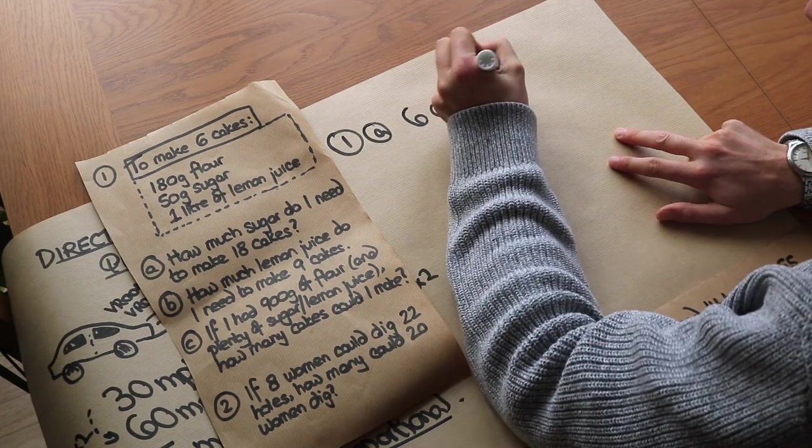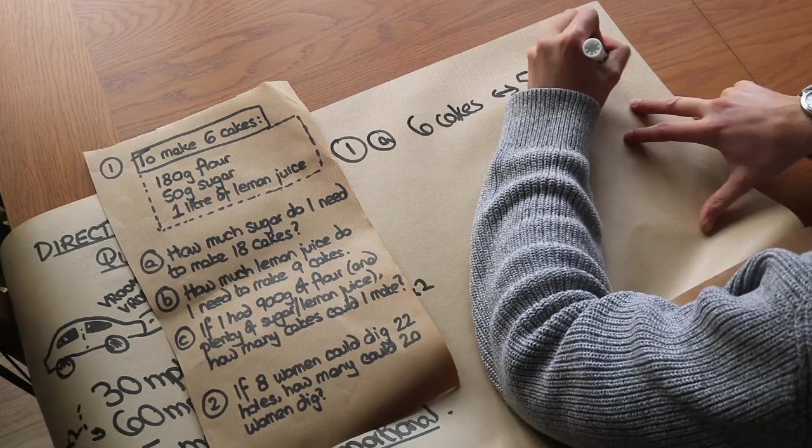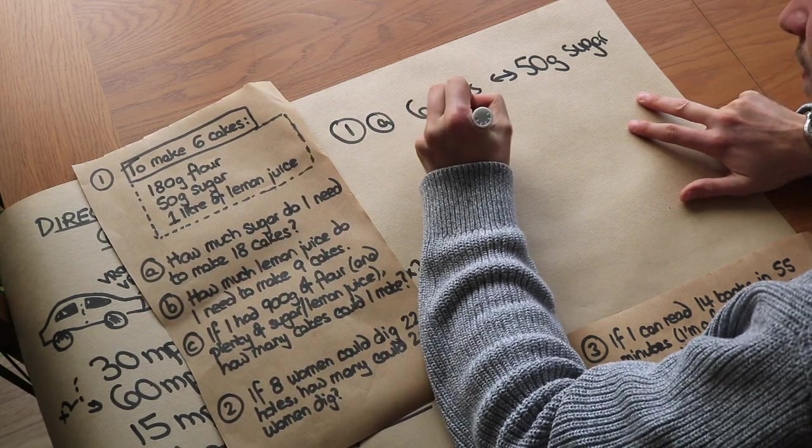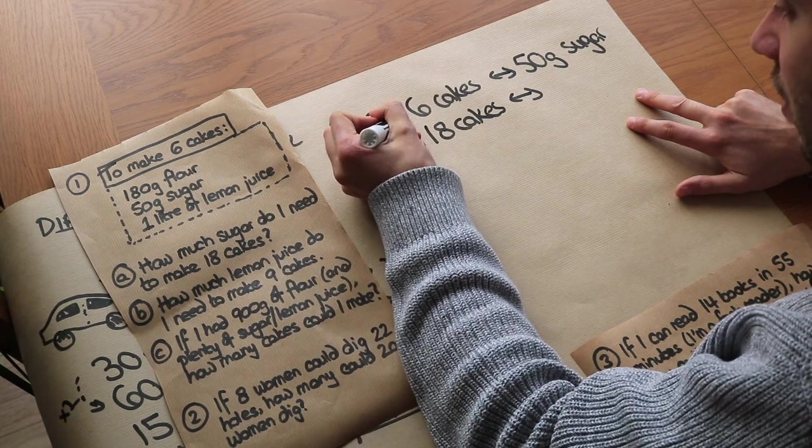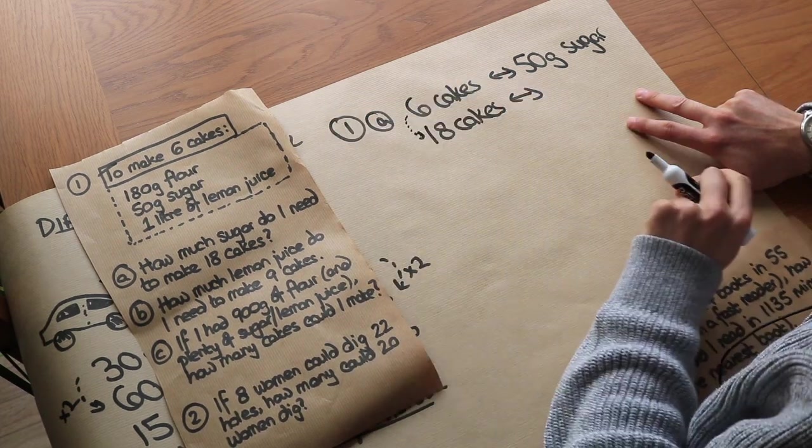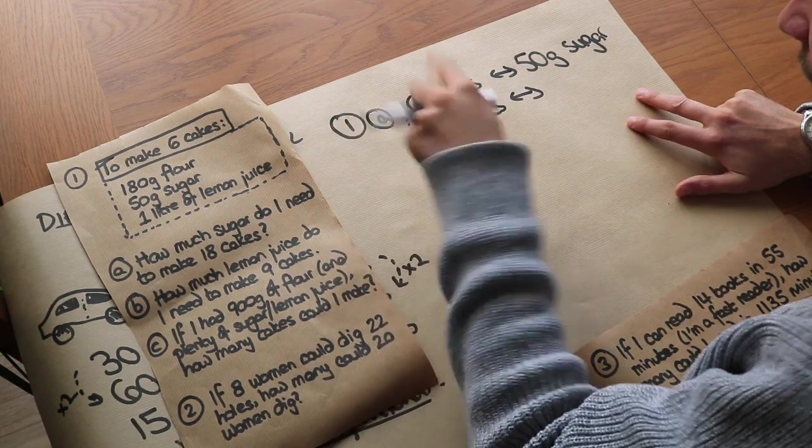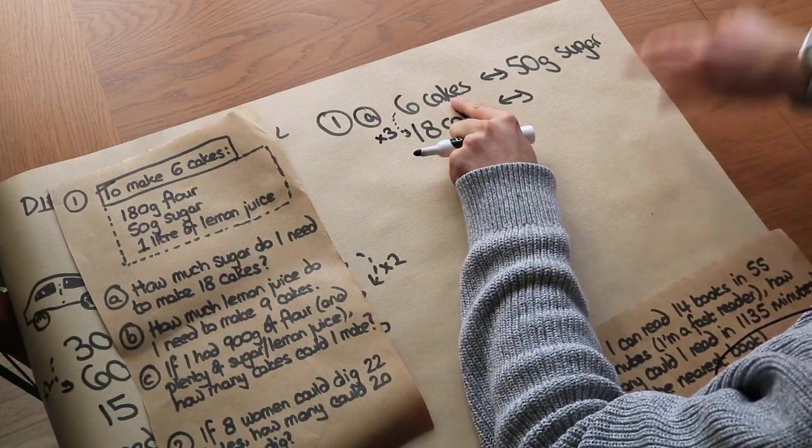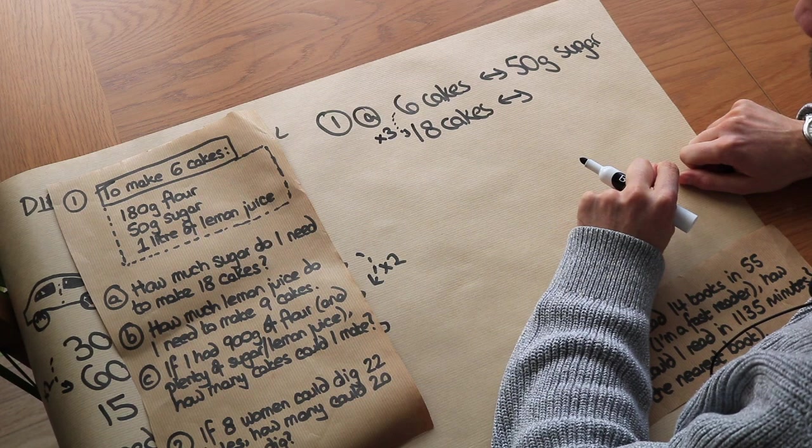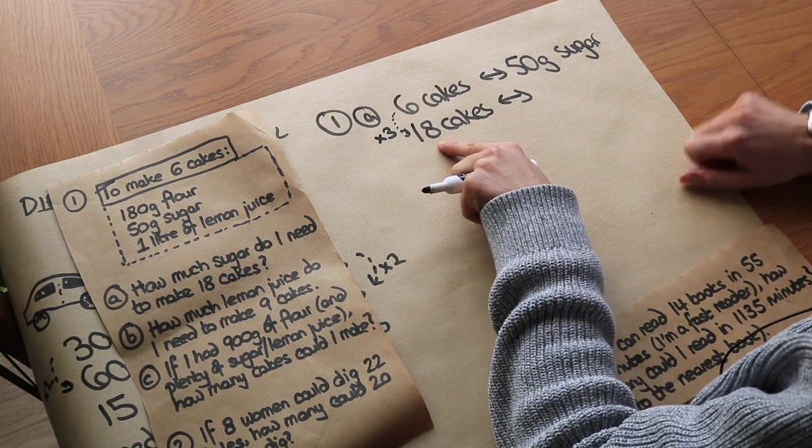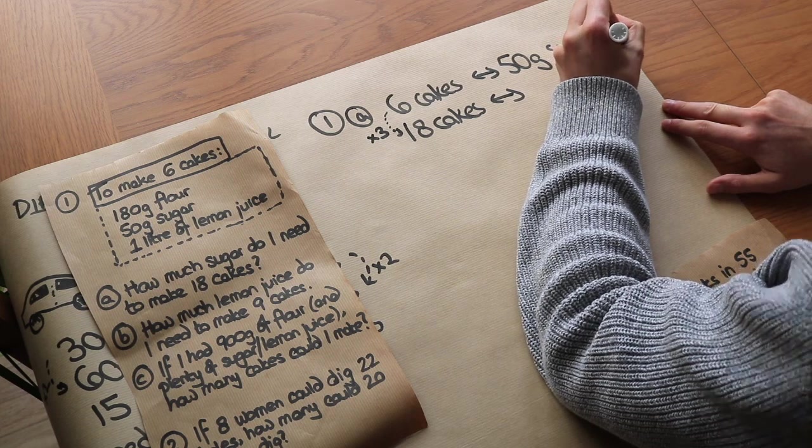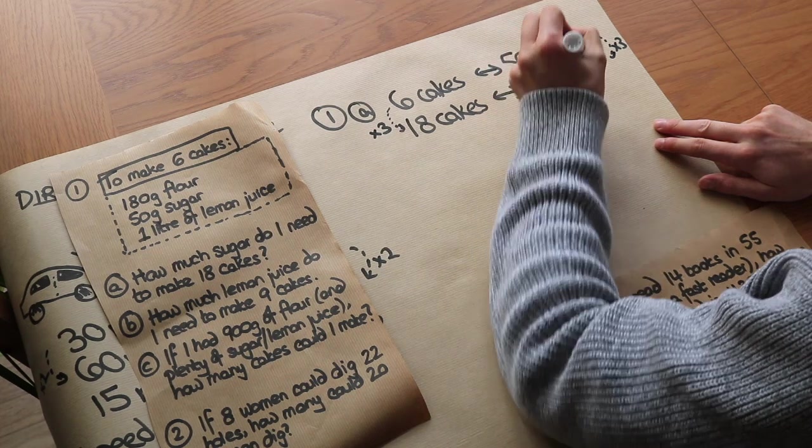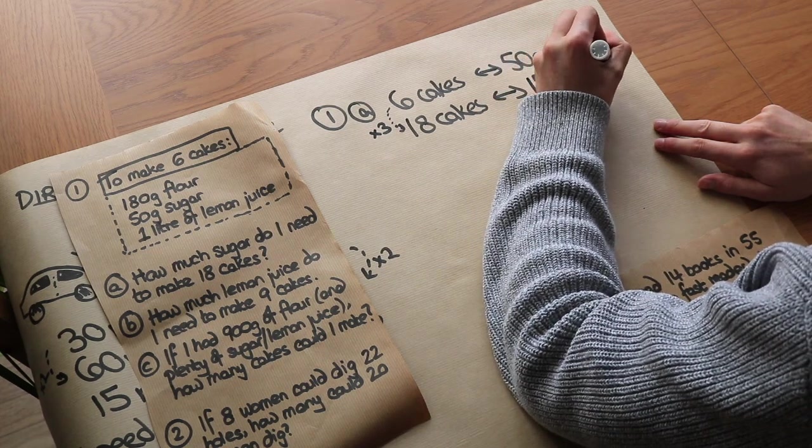...then we'd need 50 grams of sugar, so it's helpful to write the information out. So what about to make 18 cakes? Now what we do is we just work out the scaling. So how many times bigger is 18 cakes than 6 cakes? Well, it's 18 divided by 6, which is 3 times bigger. So because the number of cakes and the amount of sugar is directly proportional, if we've got 3 times as many cakes, we've got 3 times as much sugar. So we just need to times that by 3, and 50 grams of sugar times 3 would be 150 grams of sugar.